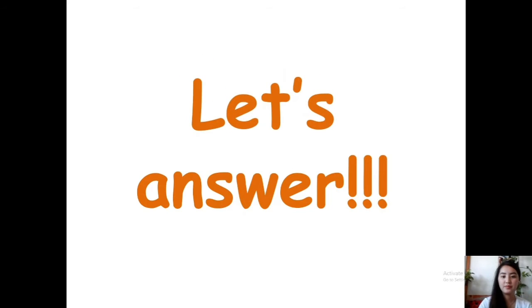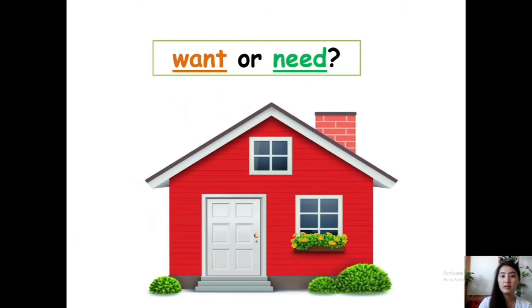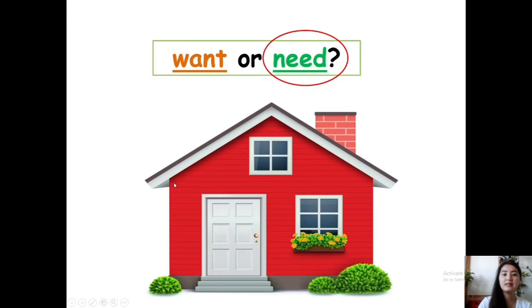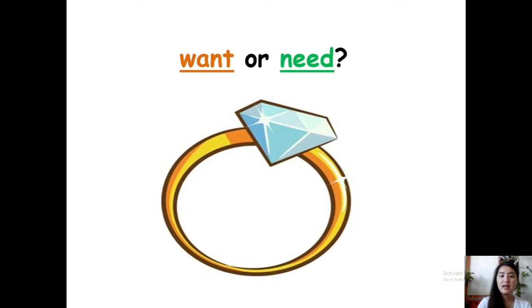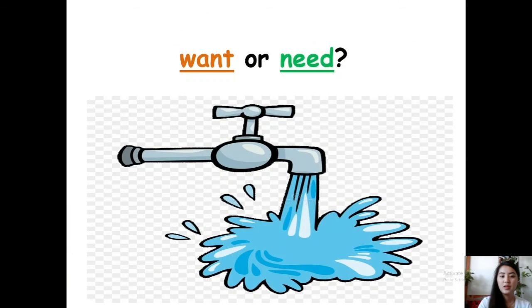Now let's answer: want or need? House — is a house a want or a need? The answer is need. Very good. Next, diamond ring — is it a want or a need? It's a want. Very good. How about water? Is water a want or a need? Water is a need. We need water to survive.